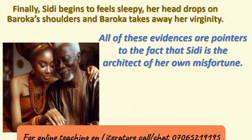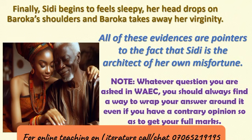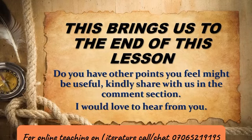Finally, Sidi begins to feel sleepy, drops her head on Baroka, and the rest, they say, is history — she becomes Baroka's wife. All of these evidences point to the fact that Sidi is the architect of her own misfortune. Whatever question you are asked, you should always find a way to wrap your answer around it. Even if you have a contrary opinion, do not say 'no, she is not the architect of her misfortune' when the question asks you to justify that she is. Hold your opinion and find a way to wrap your answers around justifying the stated position.